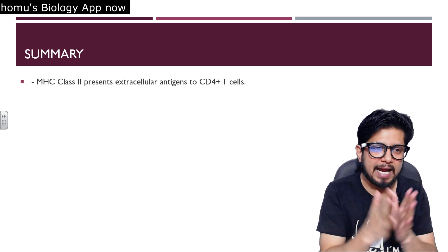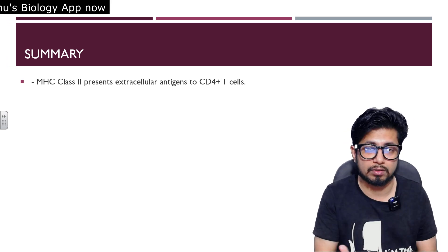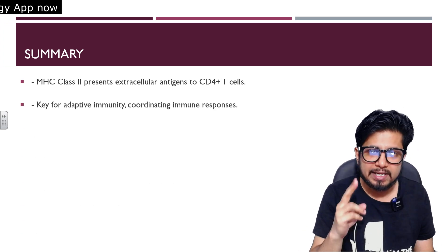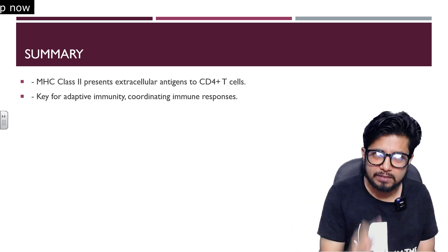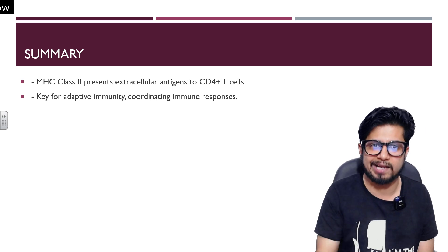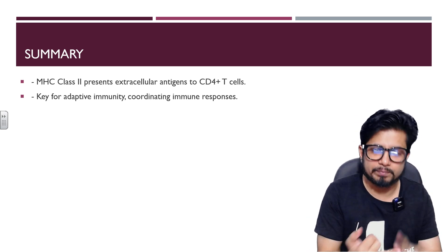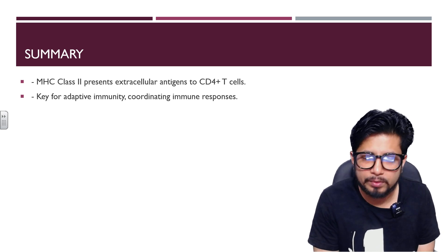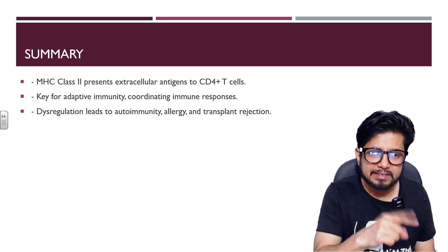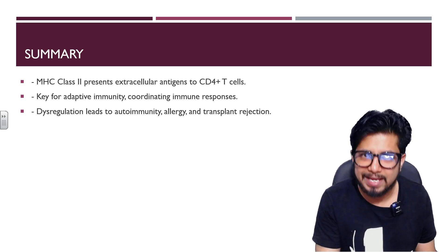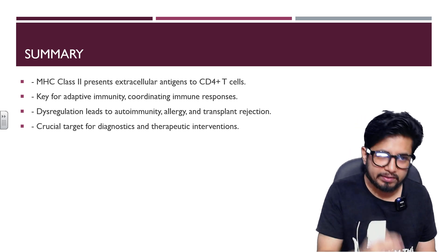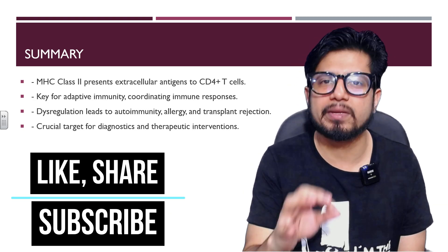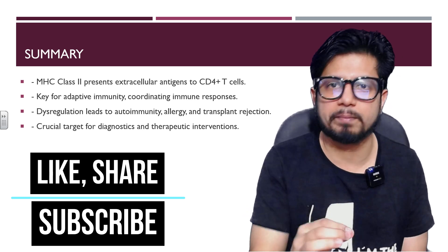In summary, MHC class 2 presents extracellular or exogenous antigenic fragments to CD4-positive T cells or helper T cells. It is not present in every cell but in professional antigen presenting cells like dendritic cells, B cells, and macrophages. It is key for adaptive immunity and coordinating immune responses, and dysregulation can lead to autoimmune disorders, allergy, and transplant rejections, making it a critical target for diagnostic and therapeutic interventions.